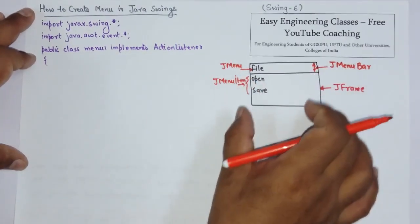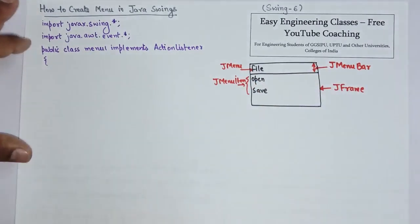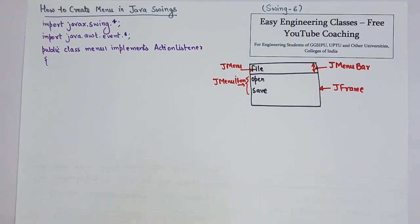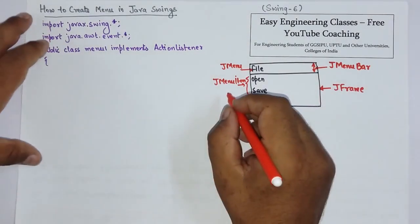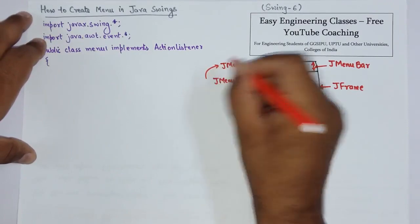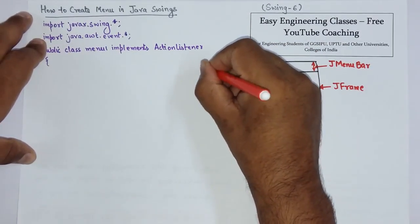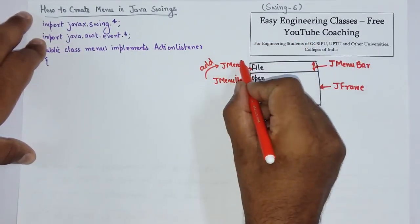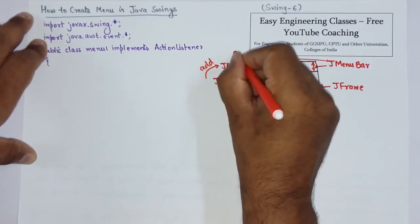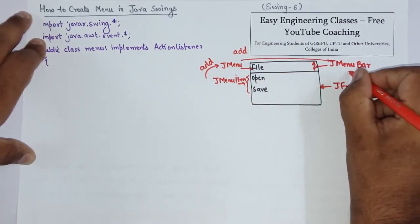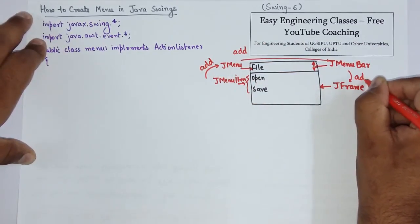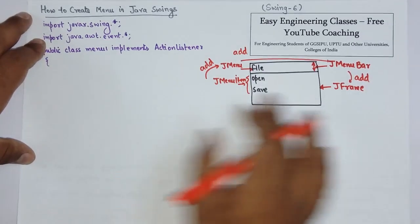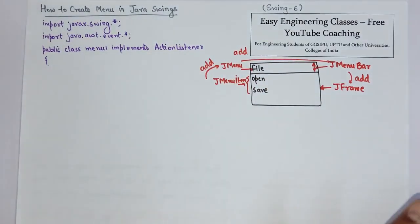So you have to create a structure. So if you have seen, I have to add JMenuItem in JMenu. Then I have to add JMenu to the JMenuBar. And finally I have to add JMenuBar to the frame. So we will proceed in this manner only.